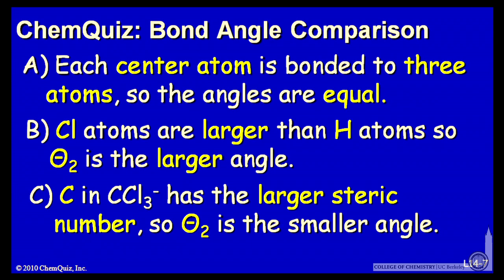Let's look at some explanations for each of the three answers. A: each center atom is bonded to three atoms, so the angles are equal. B: Cl atoms are larger than H atoms, so θ₂ is the larger angle.